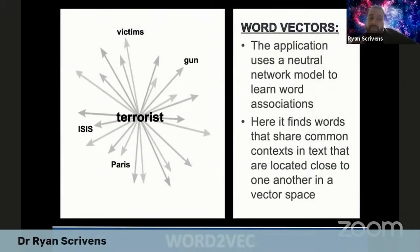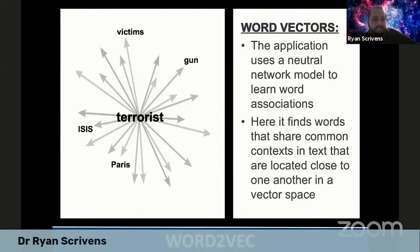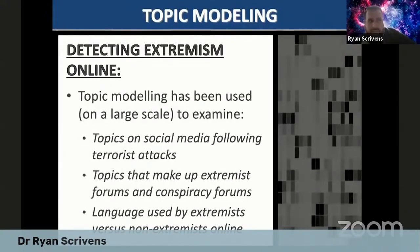Word2Vec is an application used in this space as well as in computer science more generally. It uses neural network modeling to learn word associations, finding words that share common contexts in text and are located close to one another in a vector space. For example, if you're interested in the word 'terrorist,' Word2Vec looks in its vector spaces to find closely linked words — on screen, ISIS appears as the closest word related to terrorism, followed by Paris, suggesting the topic of discussion could be the Paris attacks. Topic modeling is becoming the more popular approach for understanding extremism online, ranging from topics on social media following terrorist attacks to language used by extremists versus non-extremists.